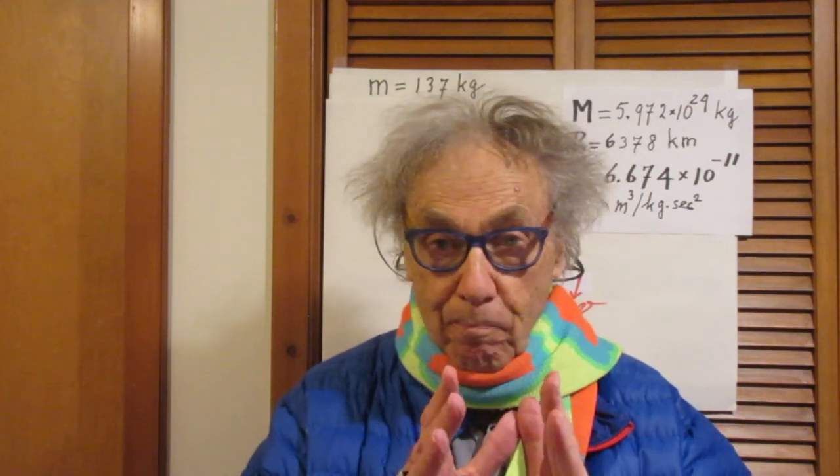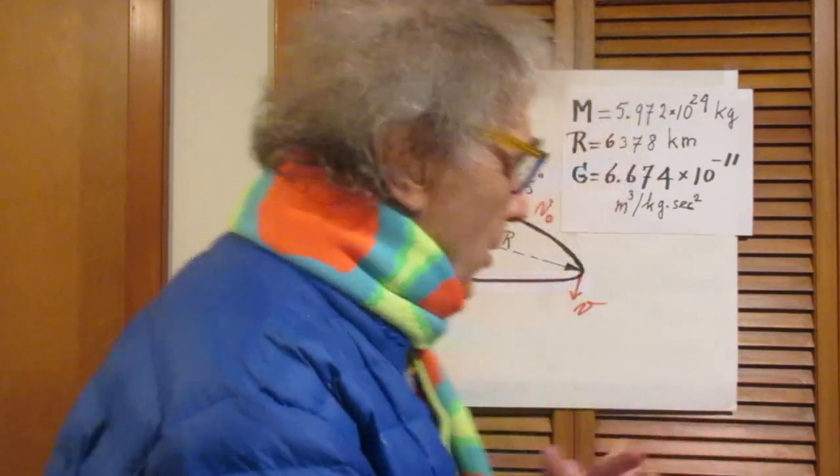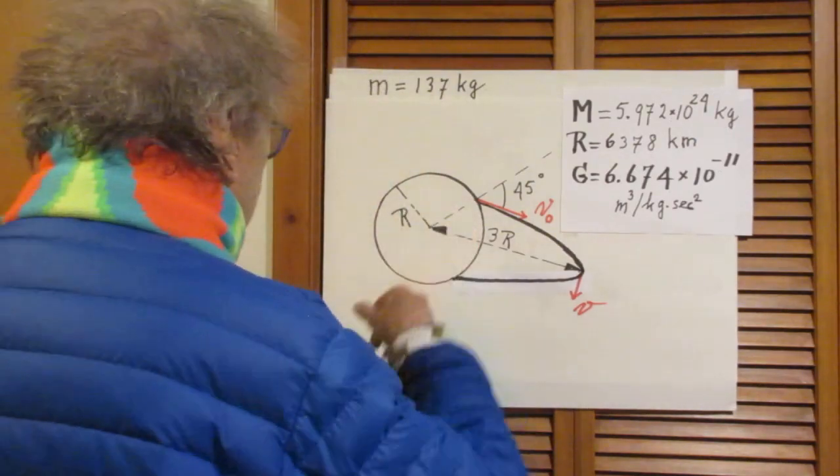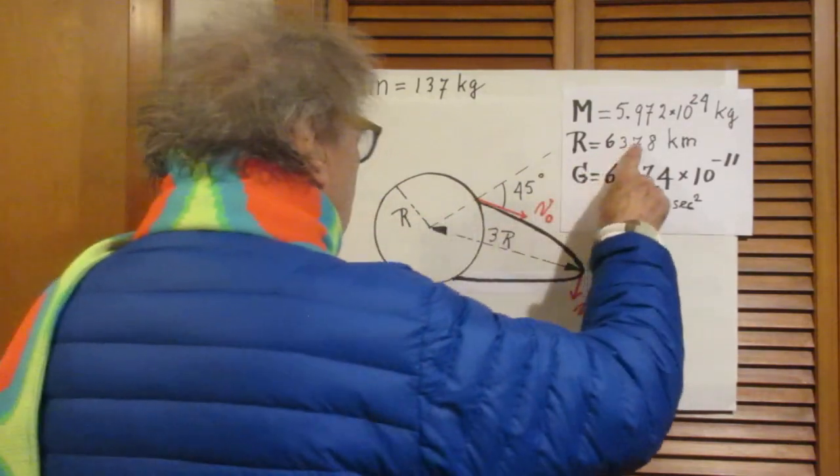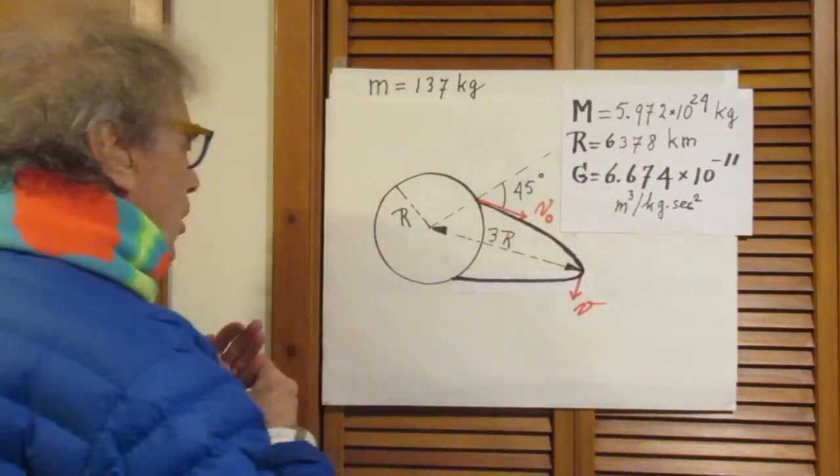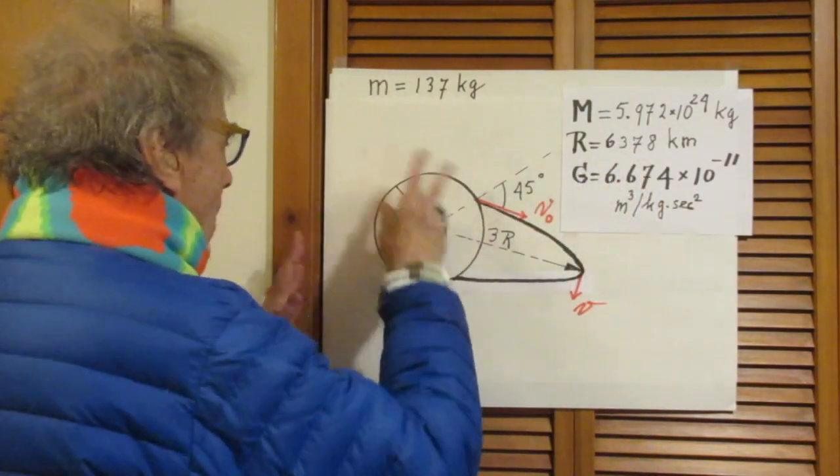You ready? I am. So here we have this magic planet again, which happens to have the same mass as the Earth and the same radius as the Earth. It's spherical and there is no atmosphere.